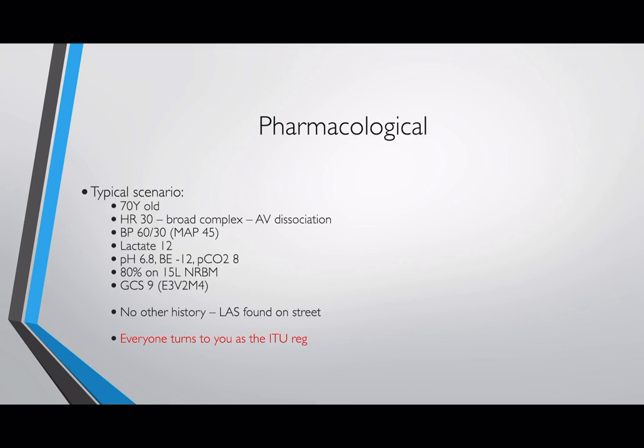Looking back at the pharmacology talk, we discussed a 70-year-old who came in with complete heart block — hypotensive, shocked, with evidence of biochemical hypoperfusion including hyperlactatemia, acidosis, and a decreased conscious level showing inadequate perfusion to the brain. This is a patient who needs quite urgent management to improve cardiac output and thus improve tissue perfusion to vital organs such as the brain, kidneys, and liver.